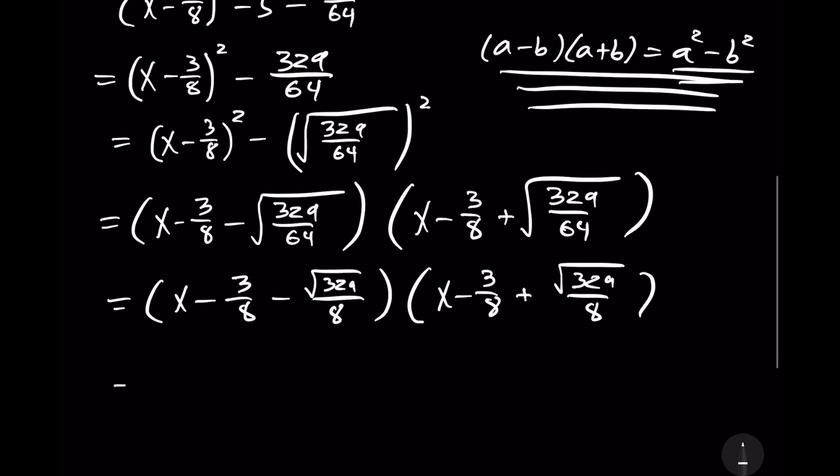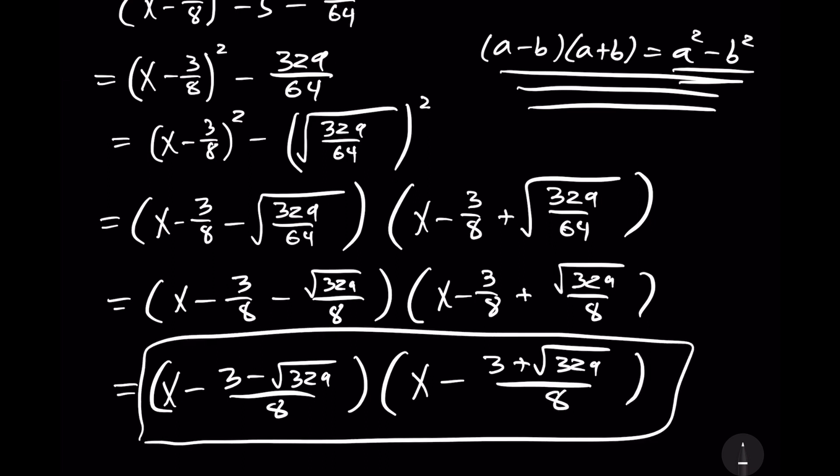And then finally, we get x minus 3, minus the square root of 329 over 8, that quantity times the quantity x minus 3 plus the square root of 329 over 8. So, that is our answer. We have completely factored that expression.